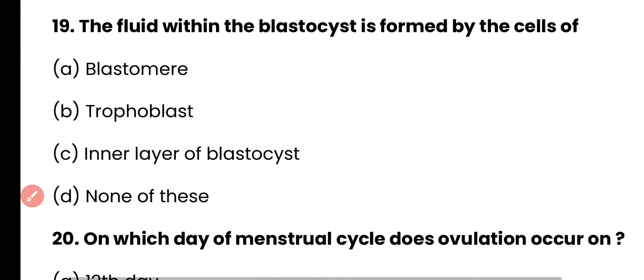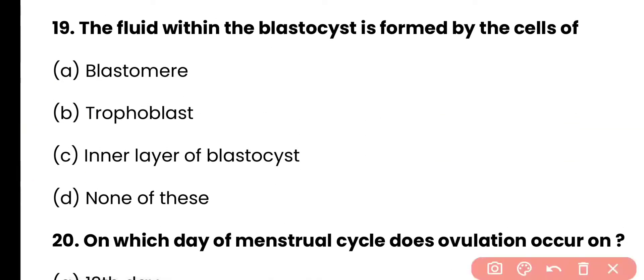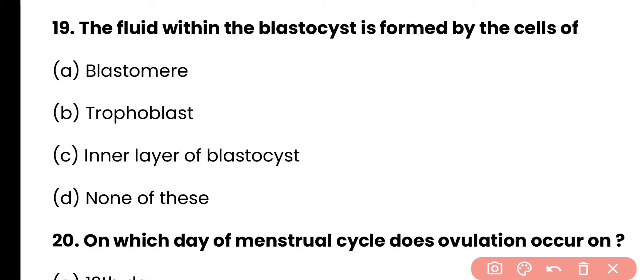Question 19: The fluid within the blastocyst is formed by the cells of — blastomere, trophoblast cells, inner layer of blastocyst, or none of these? Correct answer is option B. Trophoblast cells form the fluid within the blastocyst.